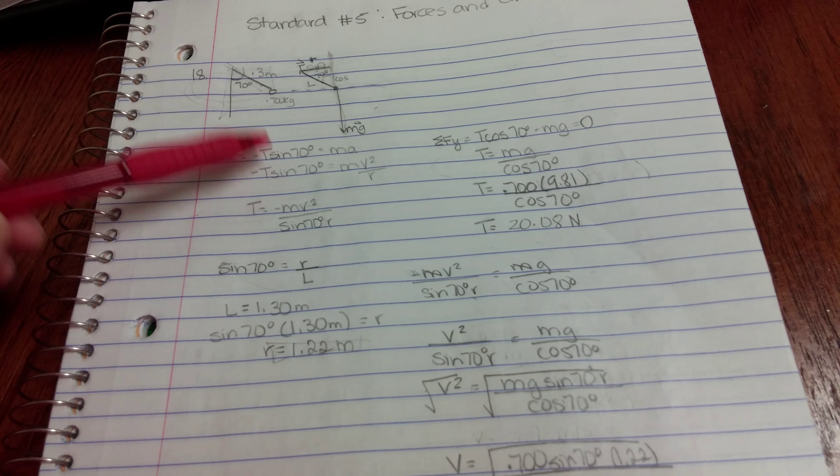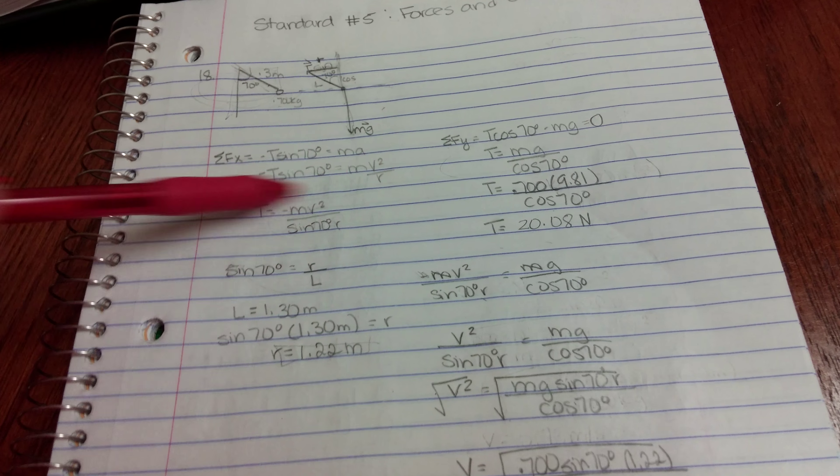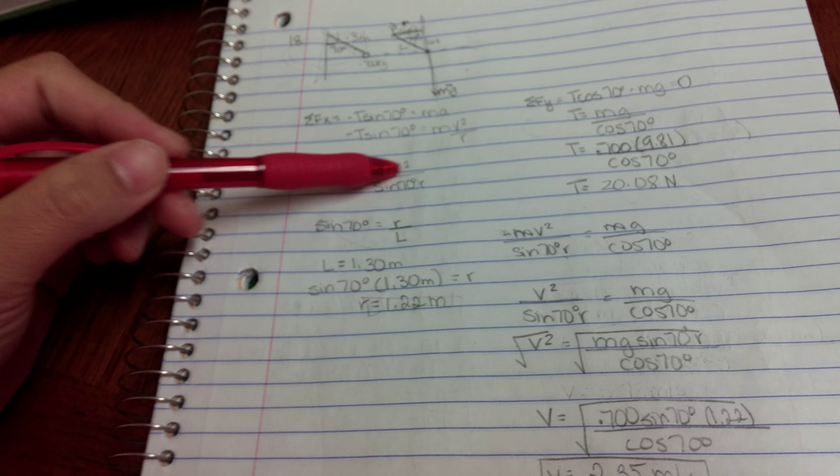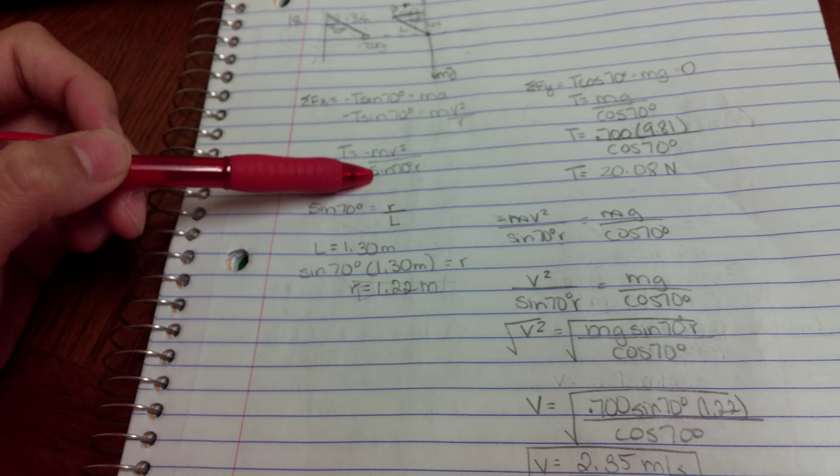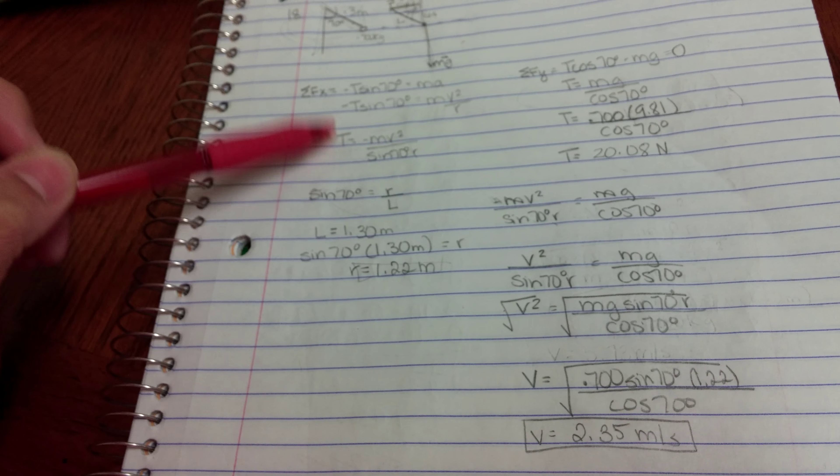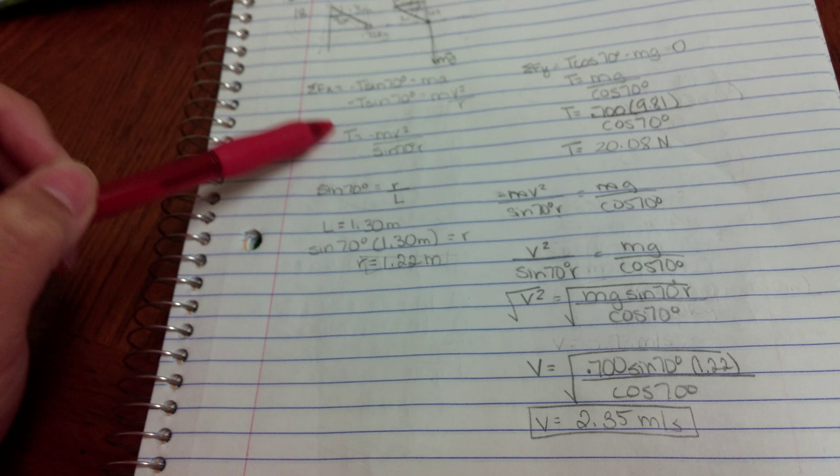So for this one, after I find all of the x components, I solve for t. t equals negative mv squared over sine of 70r. I don't know v on this side and I don't know t. So I can't solve an equation that has two unknown variables.